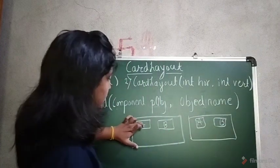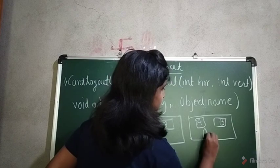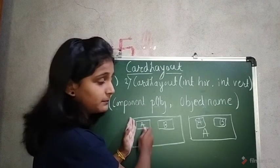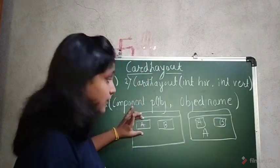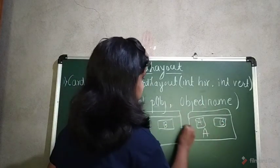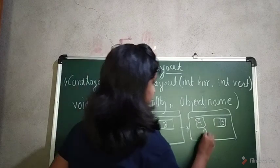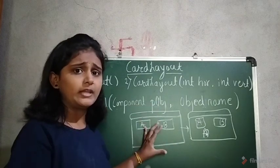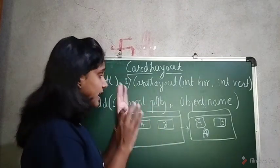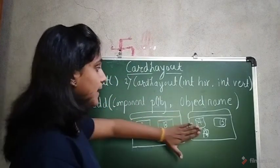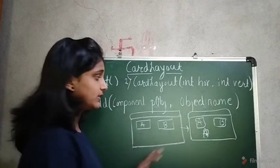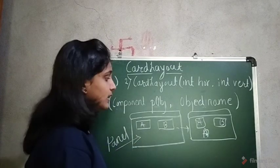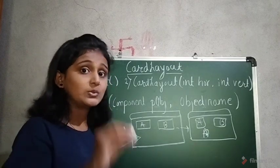These buttons are already there, but whenever you click on button A, it will show some information on the output screen. When you click on A it moves to the next screen, and when you click on B it shows different information. Depending on the component, clicking it moves to another screen — and that screen is nothing but a panel.